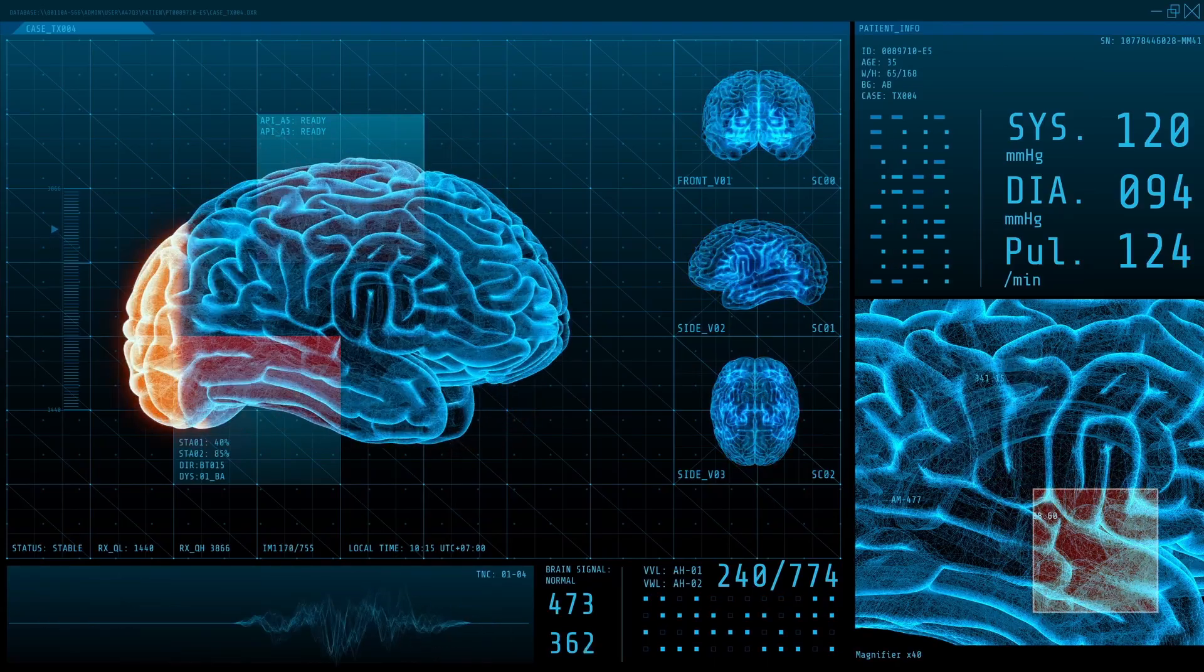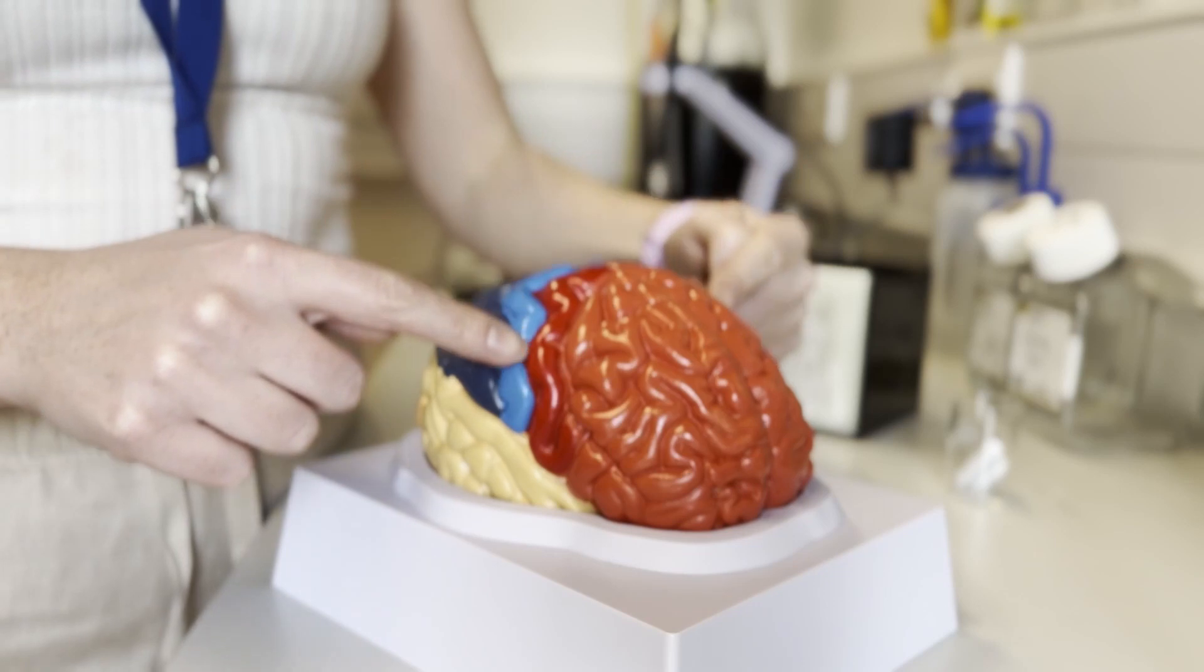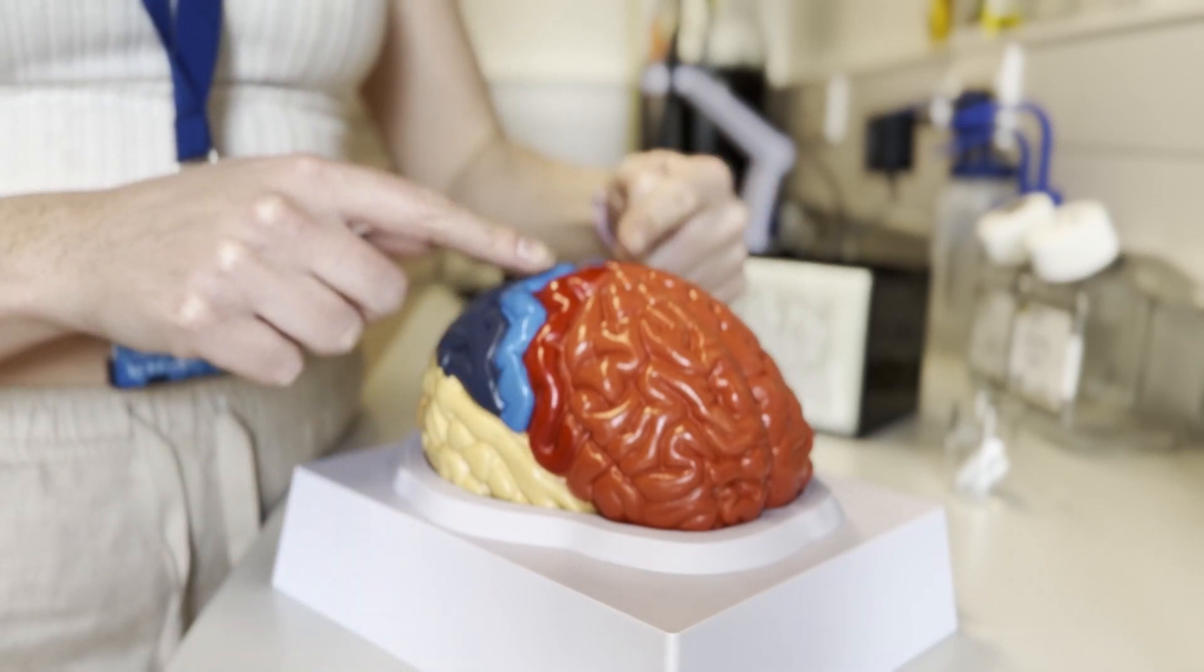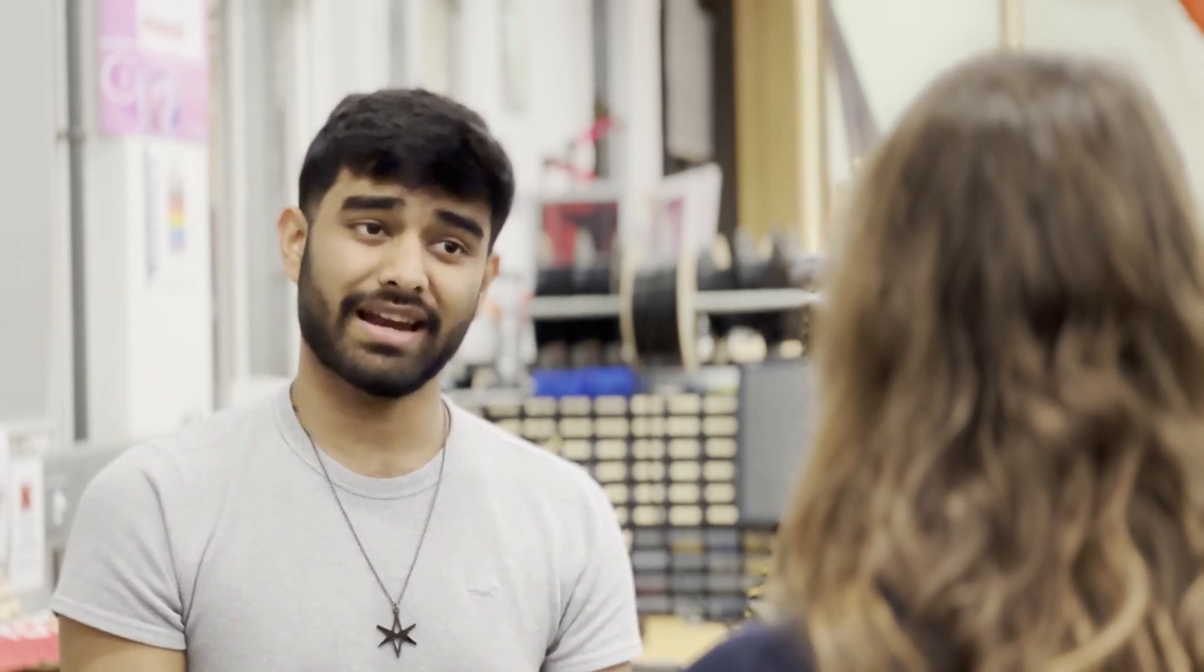After they've done the motor tasks—clenching and unclenching the fist—I do the reconstructions. You can often see the motor cortex area having an increased concentration of oxygenated hemoglobin. I'm currently trying to use deep learning algorithms to create an image classifier which can robustly use these images to determine whether it's active or baseline.